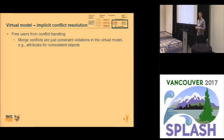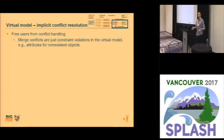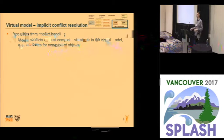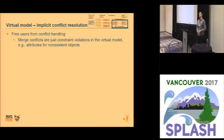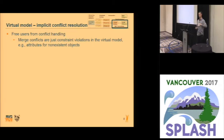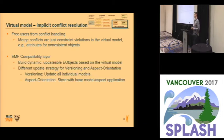For the definition of the virtual model, building a union of two models does not result in any conflicts, because you can just add things. The conflicts do not disappear suddenly, but the merge conflicts which are usually present are just constraint violations in our virtual model. For example, you might suddenly have an attribute of an object which doesn't exist anymore, or you have two values for some list index. But these are just constraint violations, and if we want to go back to a model, we handle them in our compatibility layer.